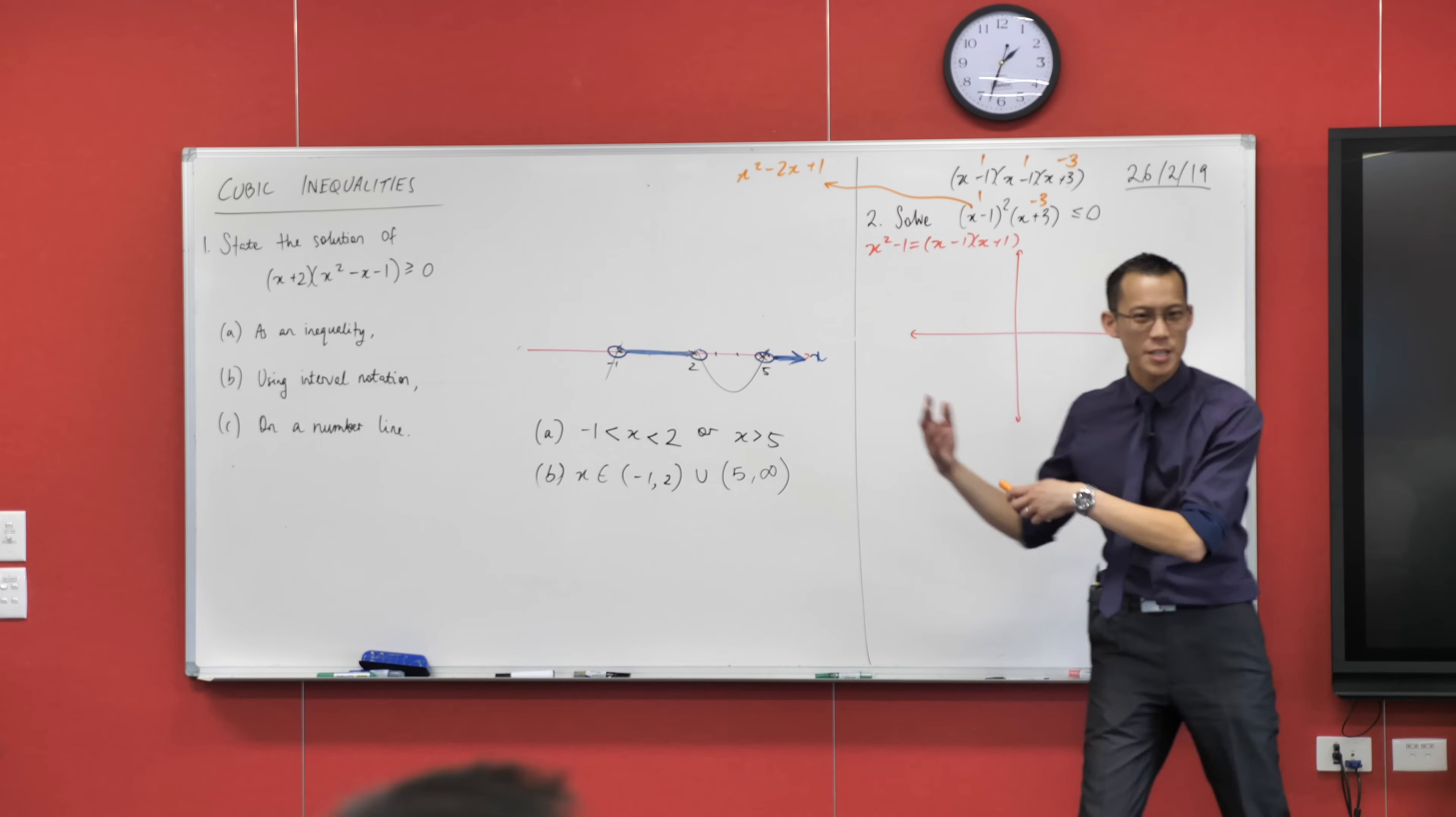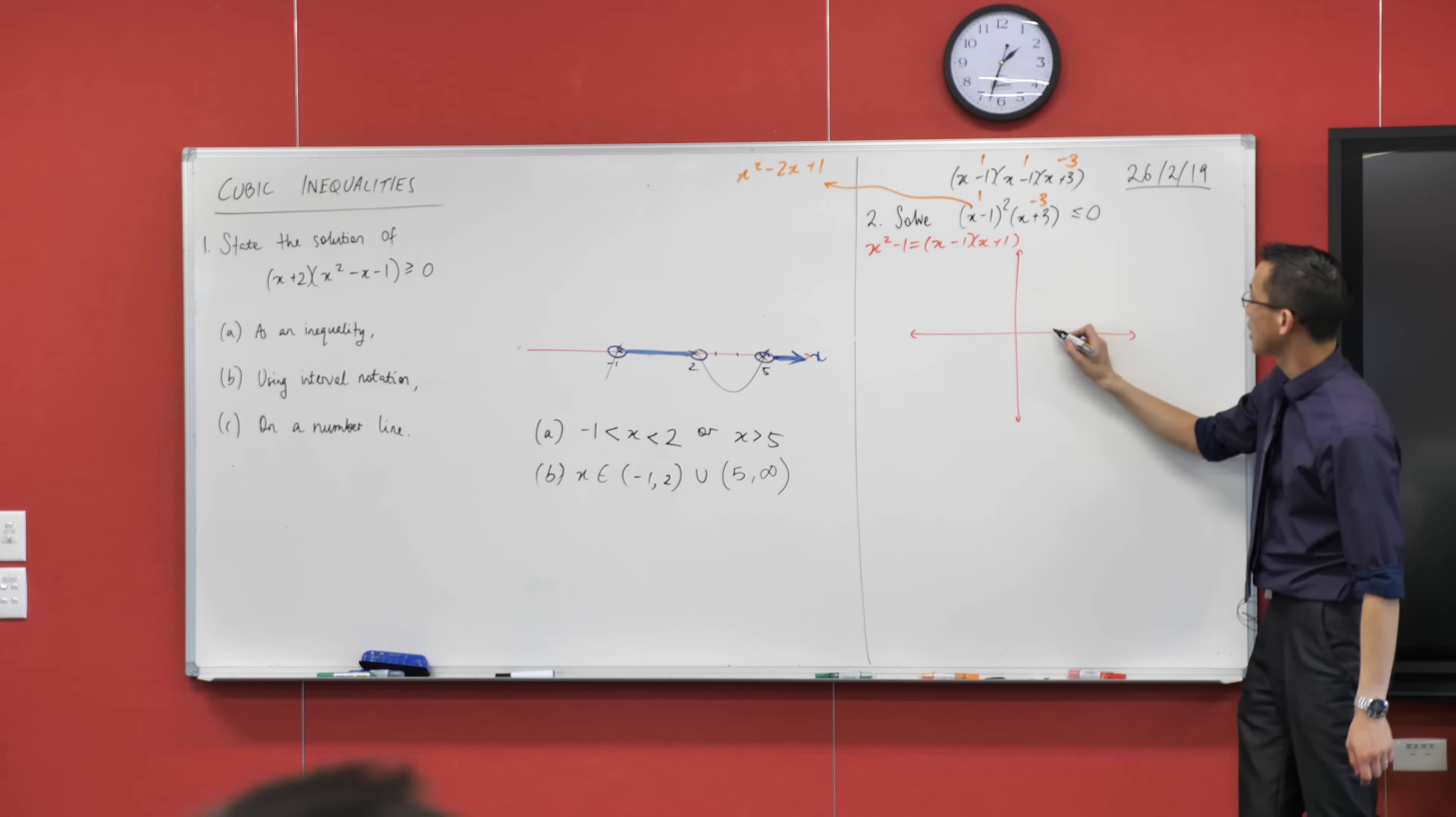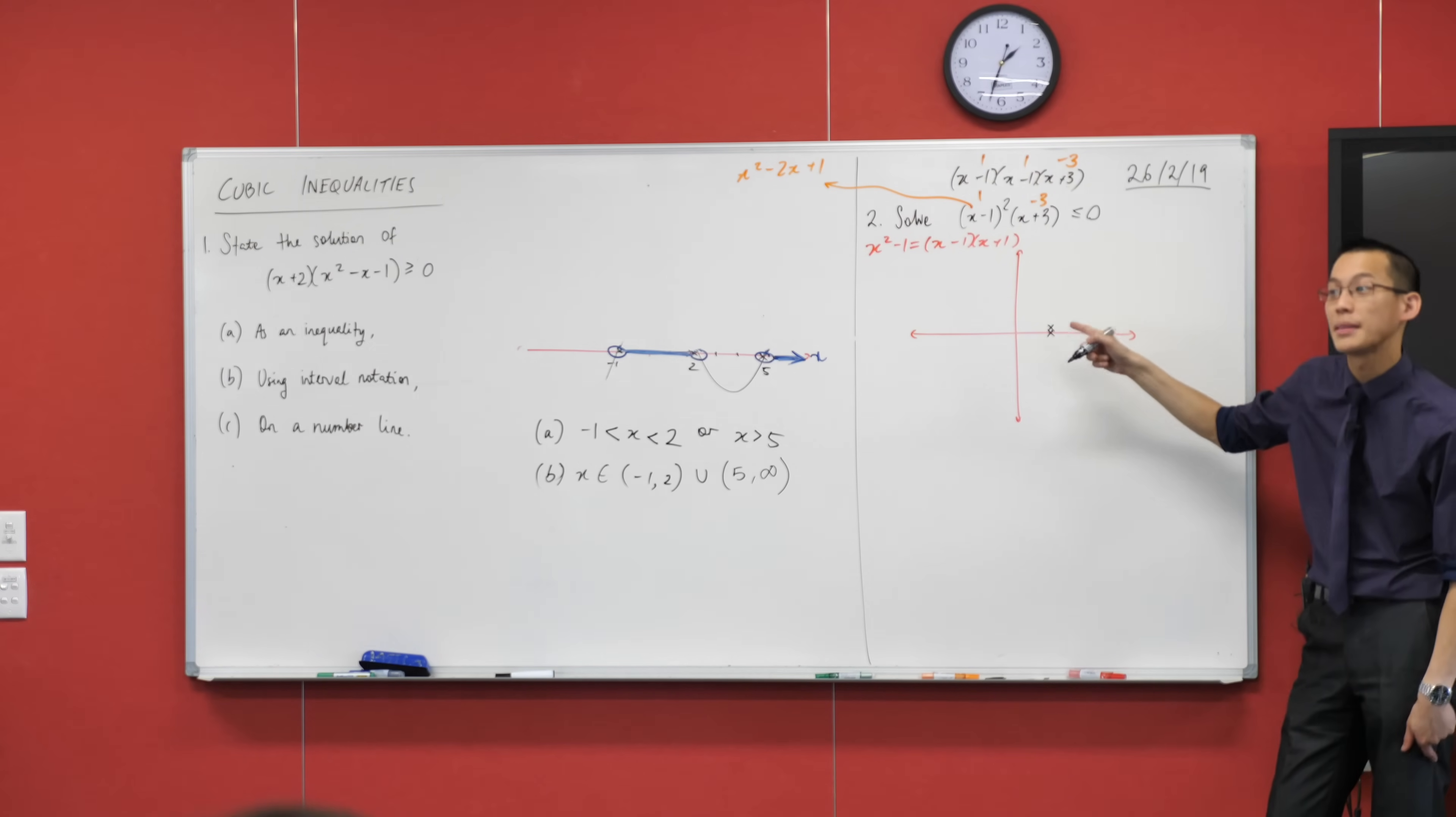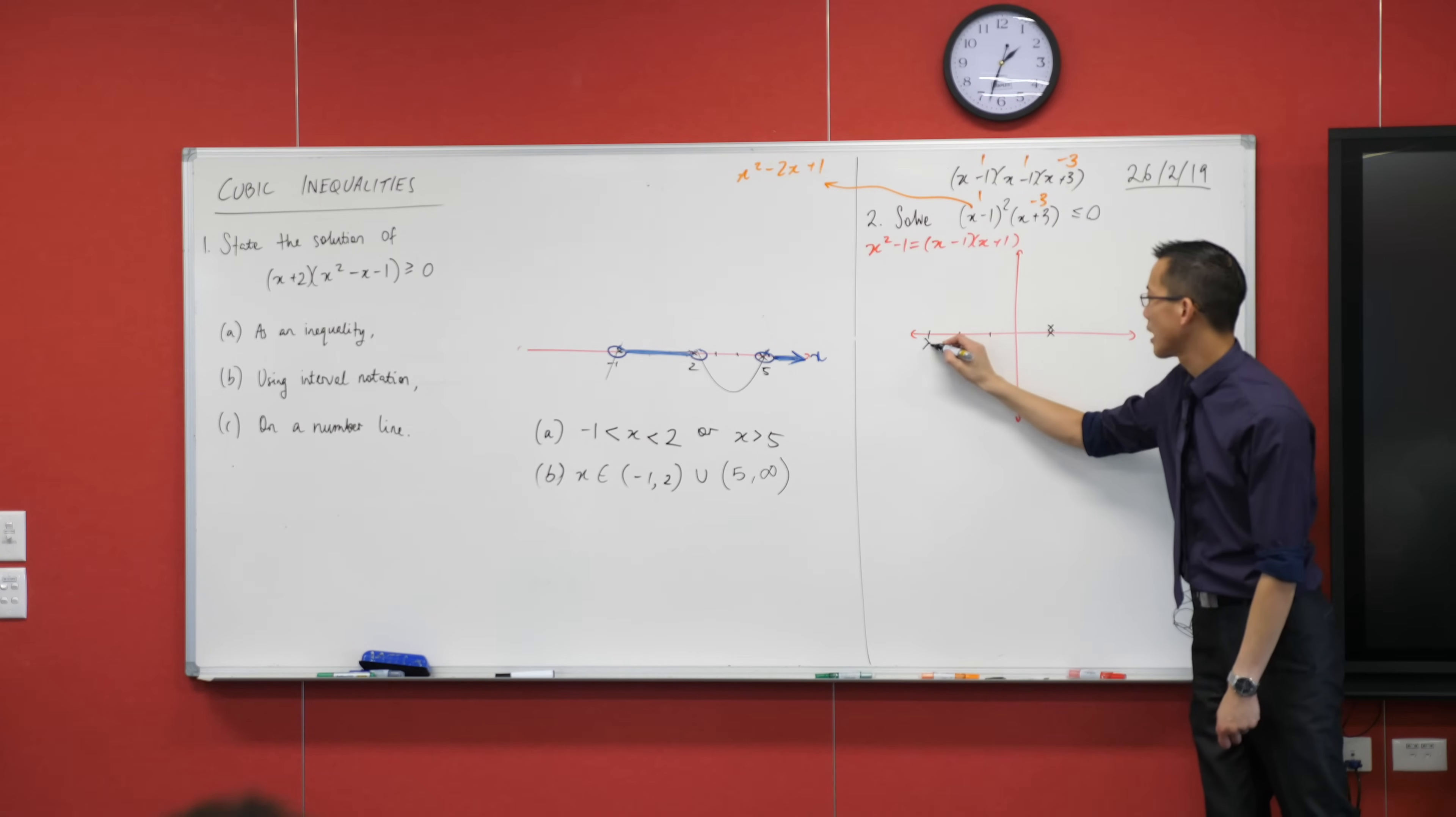Now, we need to bring this back to this graph, right? What does it actually look like? Well, I'm going to put on the information that you've just told me, right? There's the one here. I'm going to be a little weird, and I'm actually going to put another x there to indicate there's something weird happening here. And then there's negative three. One, two, three. Like so.